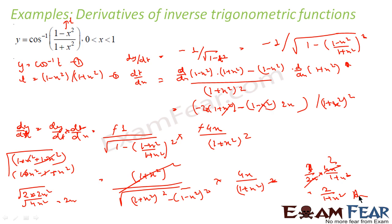So I solved this question using the composite function method, assuming (1−x²)/(1+x²) as t. The reason I solved the last few questions in different ways is that in differentiation, you can use any formula — chain rule, division rule, implicit way, explicit way, or trigonometric identities. I will also explain the logarithmic way in the next video. There are so many ways to solve the same question and get the same answer.